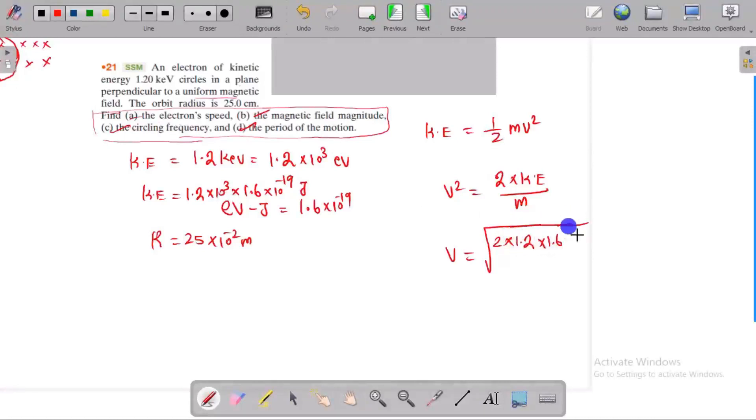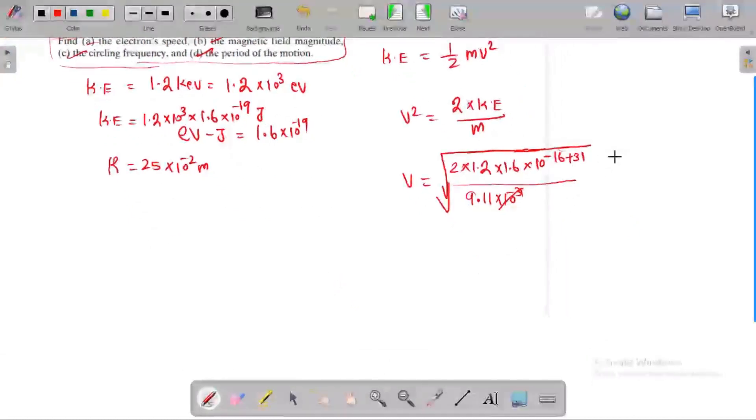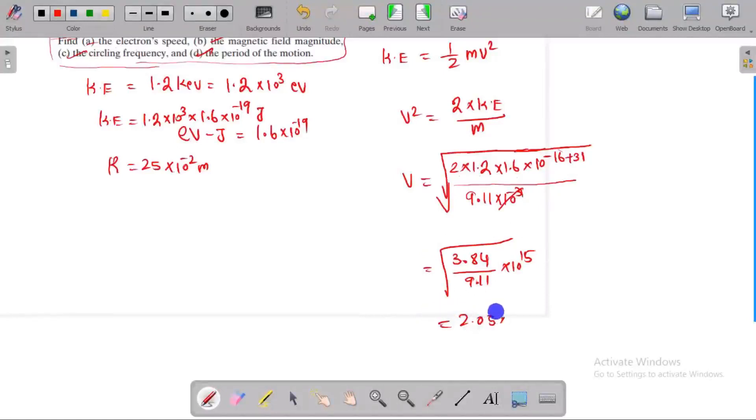So, root of 2 × 1.2 × 1.6 × 10⁻¹⁹ divided by the mass of the electron, which is 9.1 × 10⁻³¹. Calculating this: 2 × 1.2 = 2.4, times 1.6 = 3.84 divided by 9.11 × 10⁻², the answer is 2.05 × 10⁷ meters per second. So we find out the velocity.